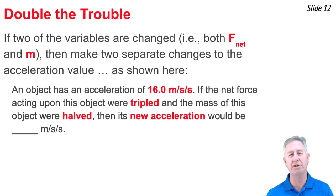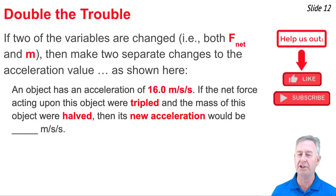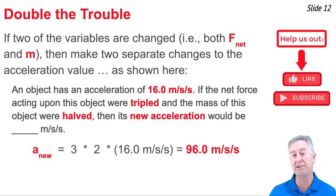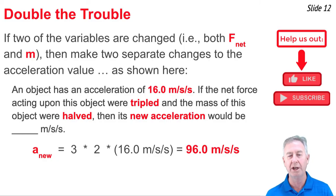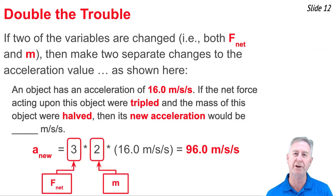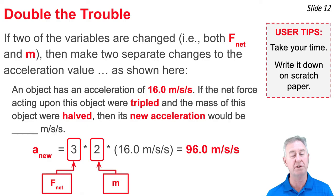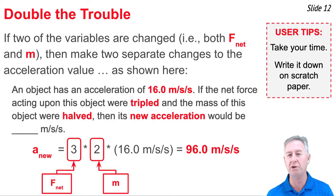On occasion, you'll get situations where both variables are changed. For instance, the F_net is tripled and the mass is doubled. In a situation like this, you take the original acceleration of 16 and make two changes: triple it because the F_net is tripled, and then account for the mass being doubled. When you're done, you end up with 96 meters per second squared. The recommendation is to take your time, write down the original acceleration value, and write down the two multipliers.